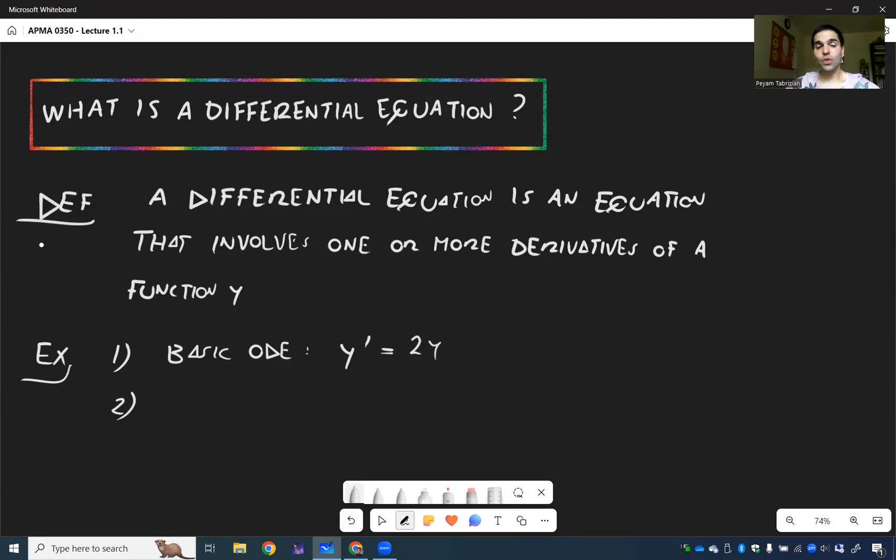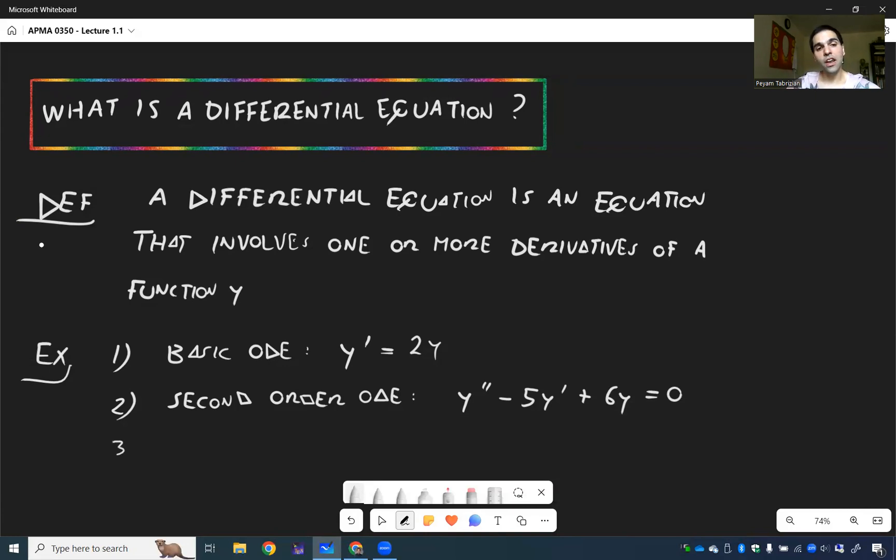But of course, you could also have second order ODE, which we'll also thoroughly discuss, such as Y double prime minus 5Y prime plus 6Y equals zero. So we'll completely solve it and also interpret it in terms of mechanics.